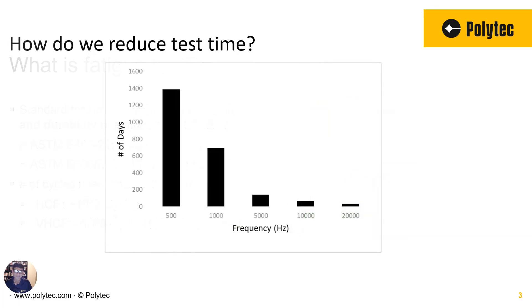If we were to test for a billion cycles and if we were to go under a thousand hertz, for example, we are talking for 500 hertz north of two years, three years of testing time. That's a lot of testing. So how do you reduce the amount of testing time?